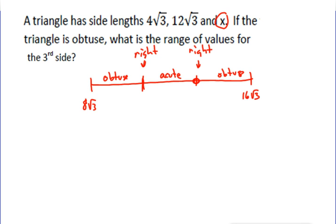So, once we know what these two points are, we can tell what's going to need to be obtuse. And so, the first one is if x is smaller, so (4√3)² plus x² we want to find out when is that going to be equal (12√3)². We're trying to find out when is it actually a right triangle.